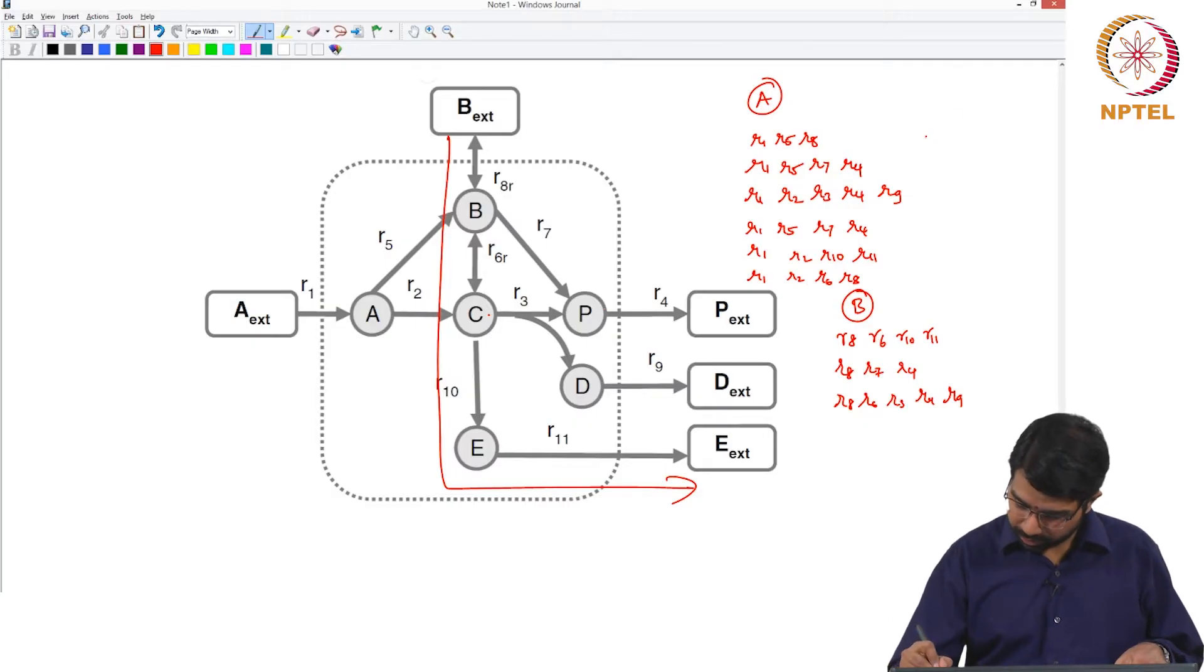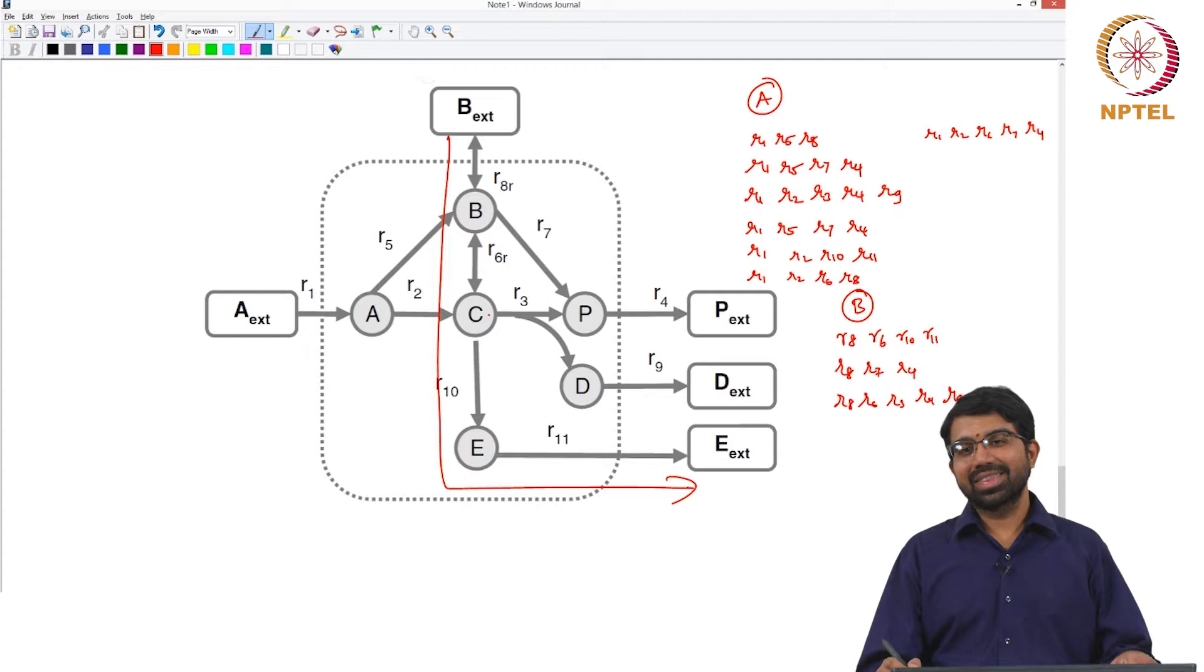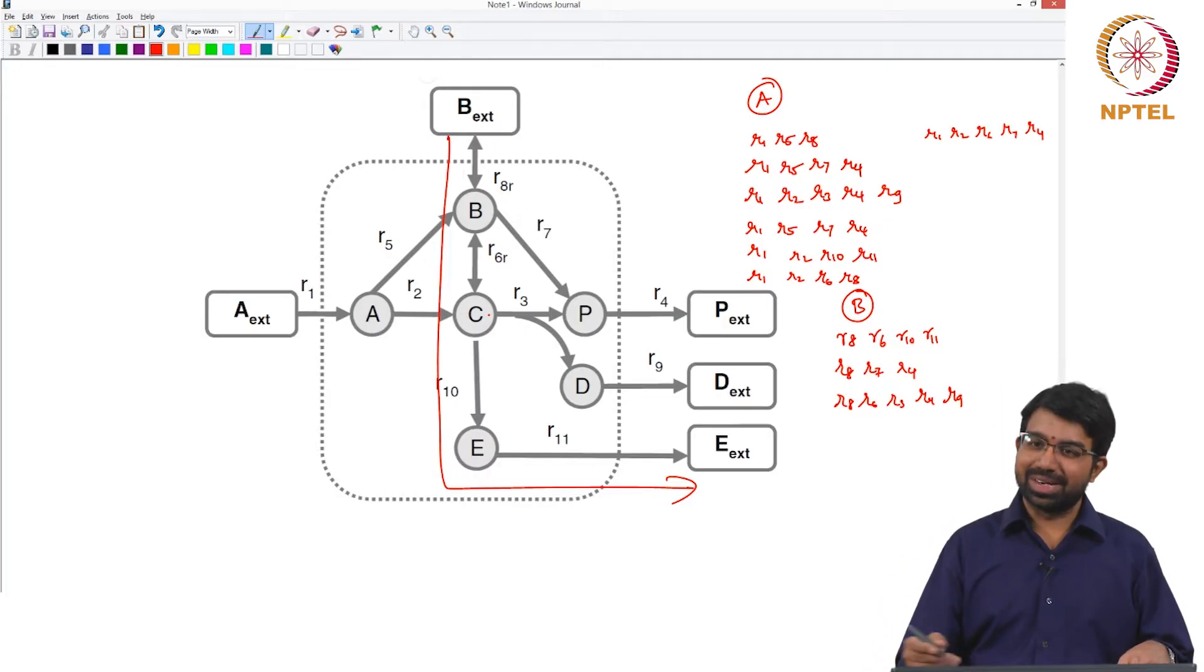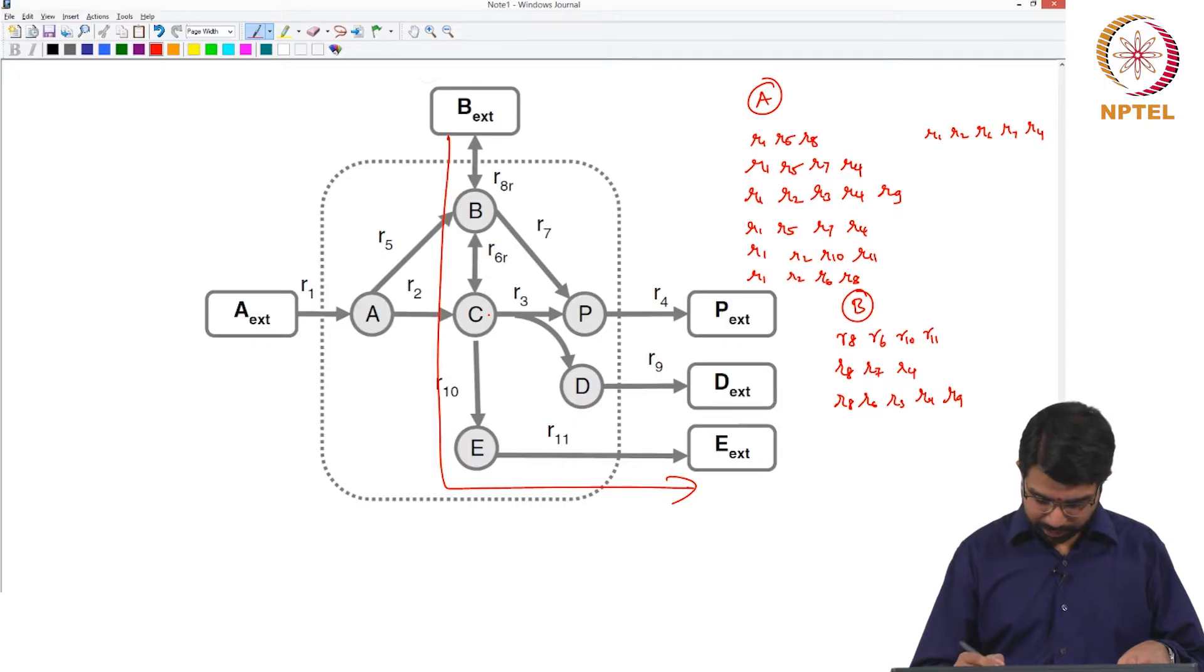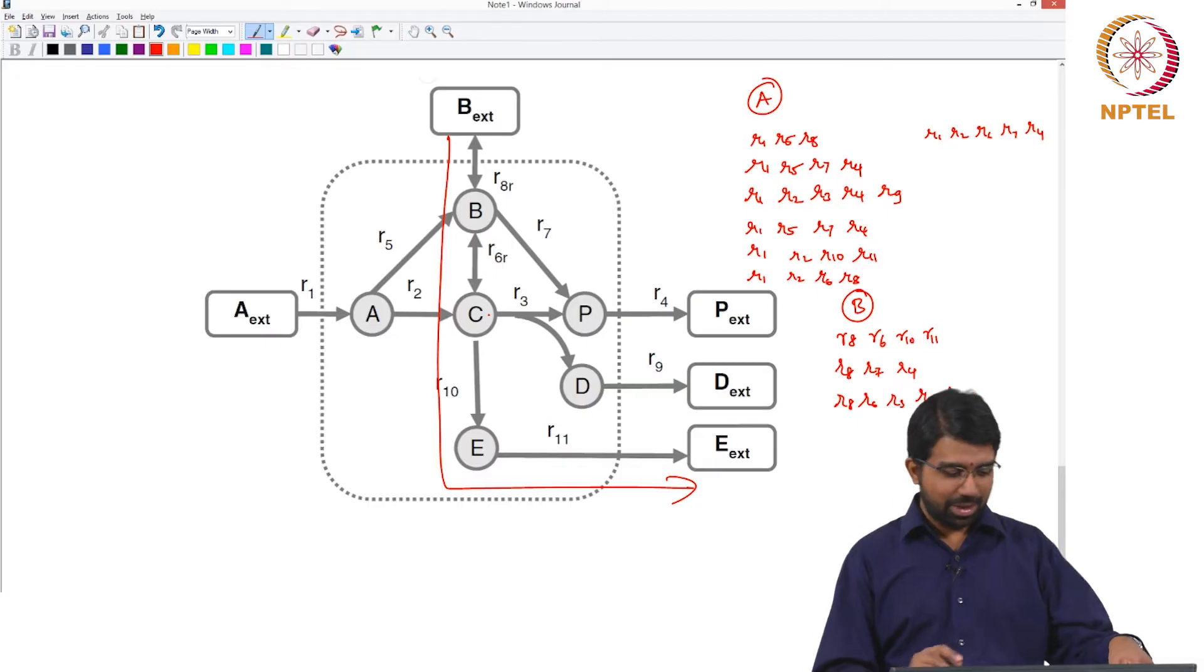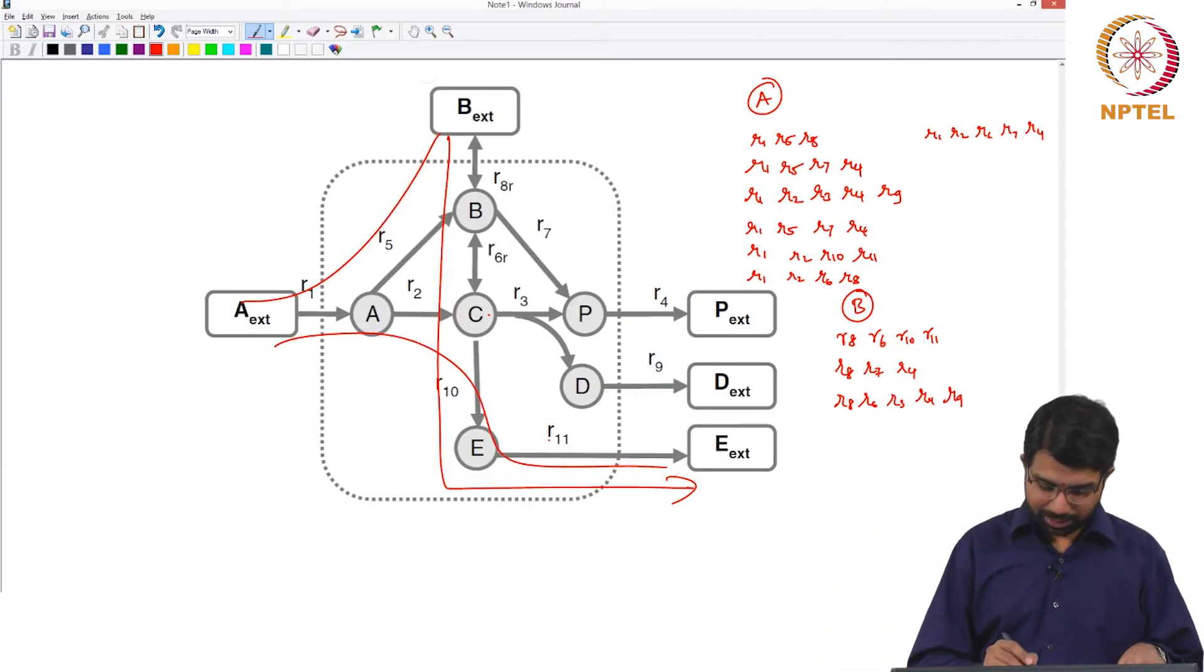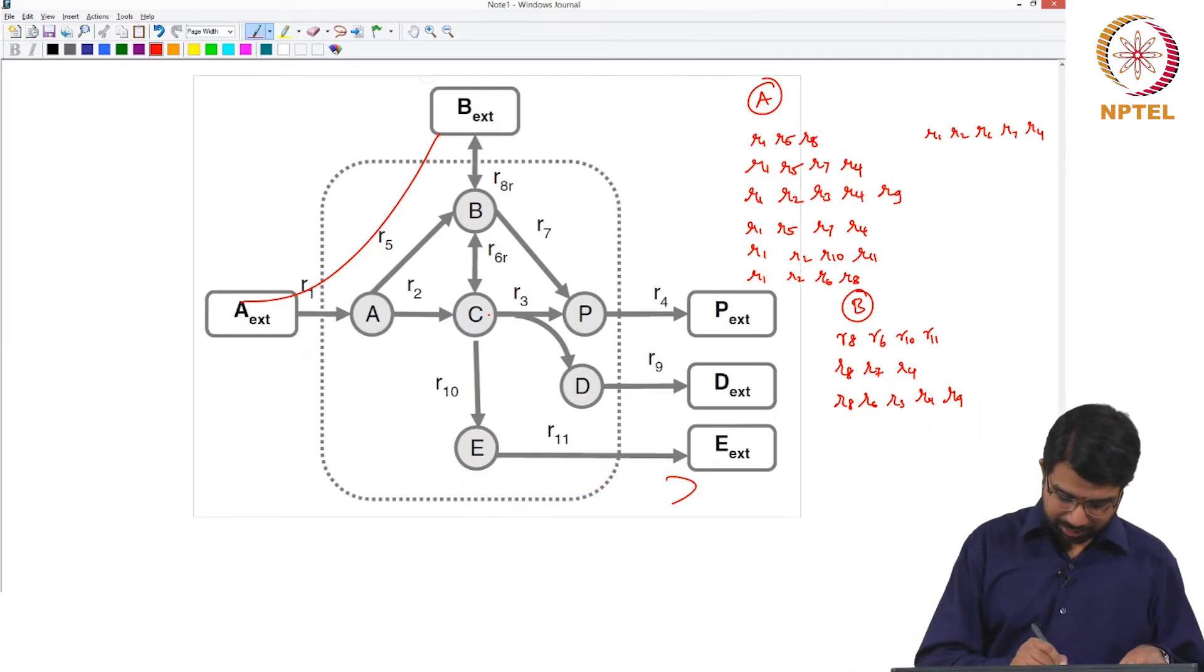So you will find that it is easier to enumerate the elementary flux modes, not the extreme pathways. Extreme pathways you will have to see if they are decomposable and so on, and you will find that some of these can be decomposed. All these are elementary flux modes. Some of them are also extreme pathways.